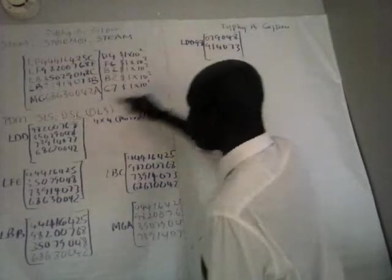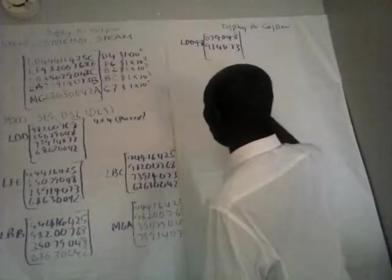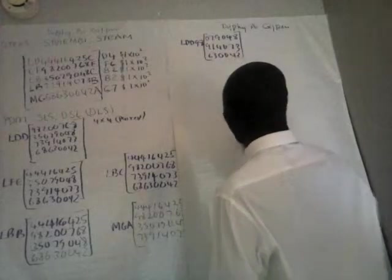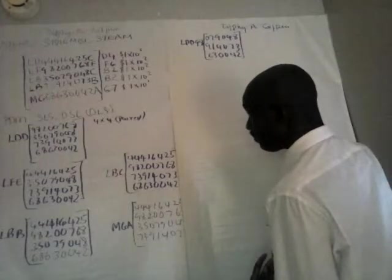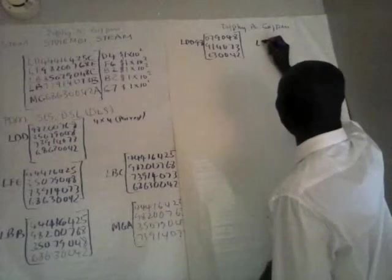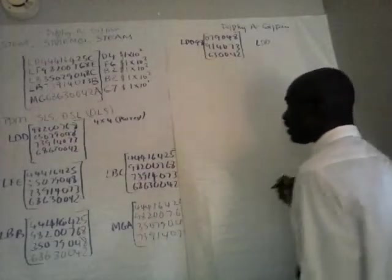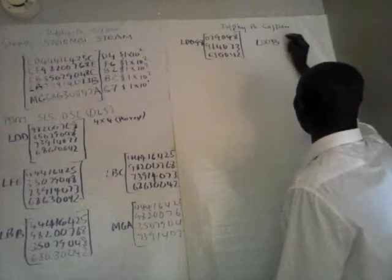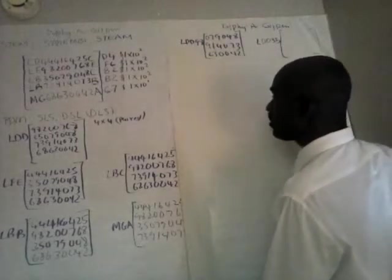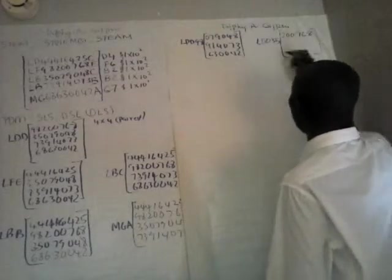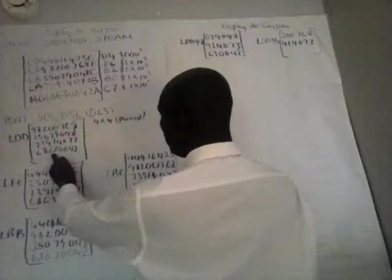We have 914073 and 630042. Instead of operating by the PDM processing algorithm, we now have LDD, coming down in this column to LDD 35. For LDD 35 we have 2768, and also 914073 and 630042.